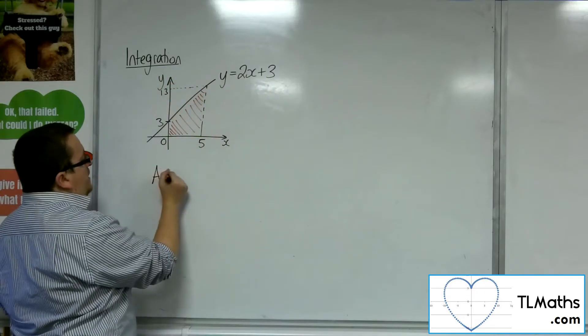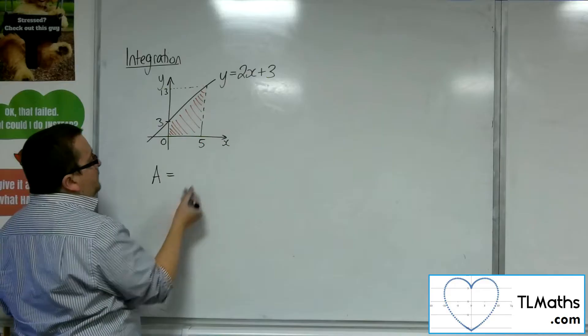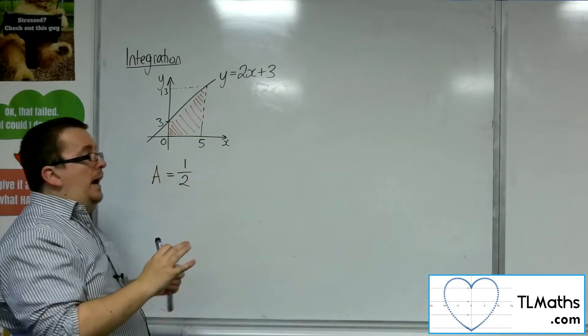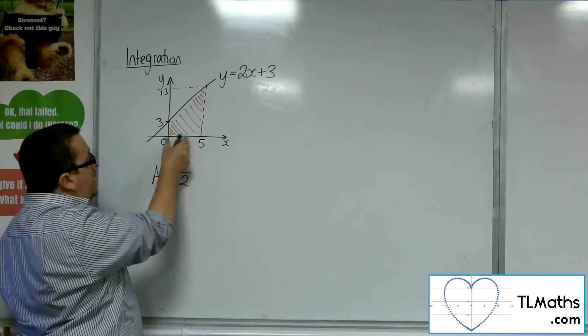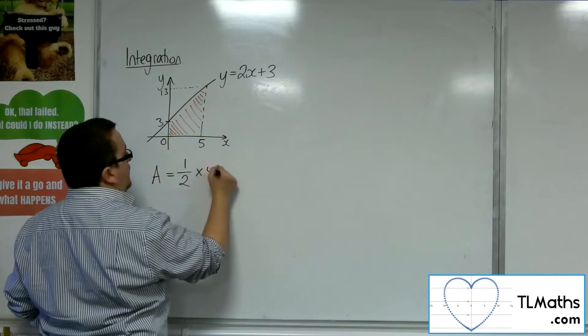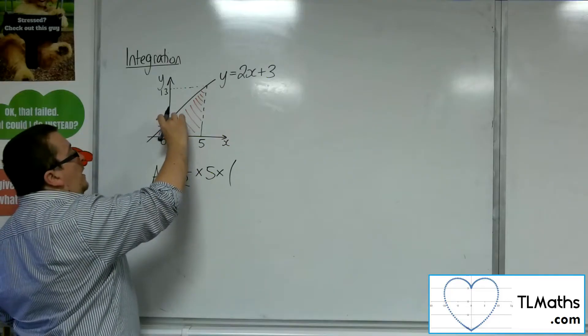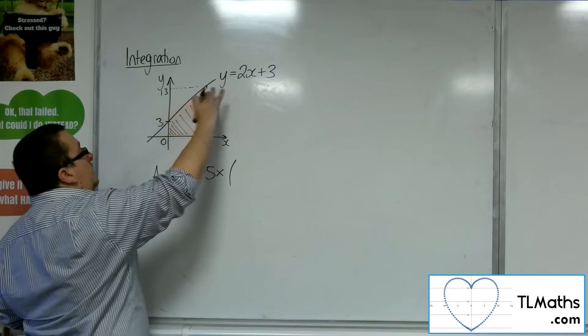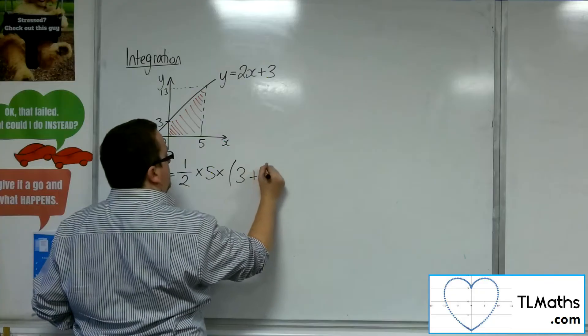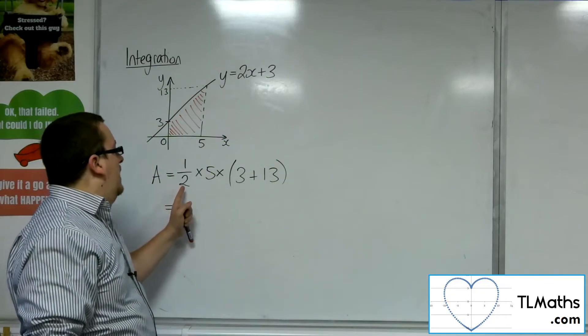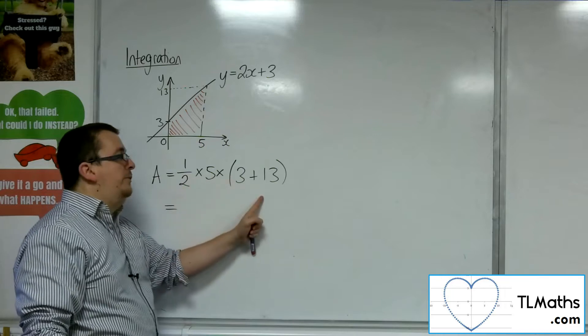Okay, so the area, shaded area that I've got there, is 1 half times by h, which is effectively the width here, the 0 to 5, times by a plus b, the two lengths that I have there. So, 3 plus 13. So we've got 1 half times 5 times 16.